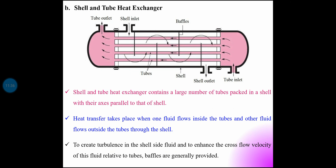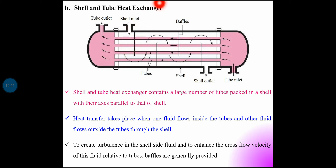The shell and tube heat exchanger consists of a large number of tubes packed in a shell, with their axes parallel to that of the shell. One fluid flows inside the tubes and the other fluid flows outside the tubes through the shell. Here is a sectional view showing the tube side and shell side flow paths.